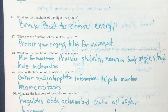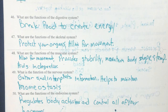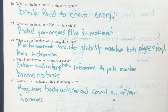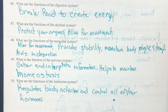The function of the nervous system is to gather and interpret information and to help maintain homeostasis. Number 50: the function of the endocrine system is to regulate body activities and control all of your hormones.